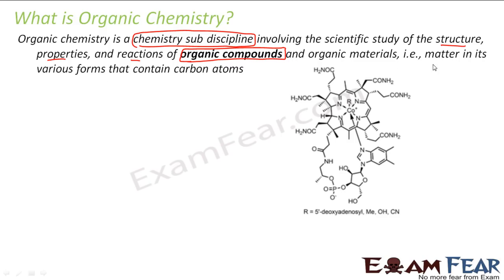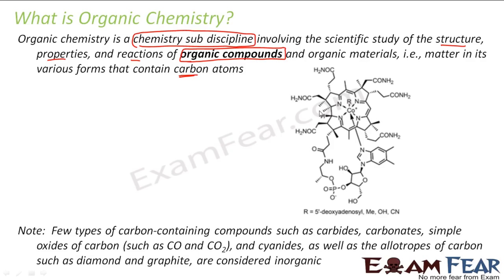What are organic compounds? Organic compounds are matter in which we have carbon atoms in various forms. The exceptions include carbon monoxide, carbon dioxide — these have carbon but are not part of organic chemistry; they are part of inorganic chemistry. Similarly, carbides, carbonates, carbon dioxide, cyanides, diamonds, and graphite also have carbon but are inorganic.